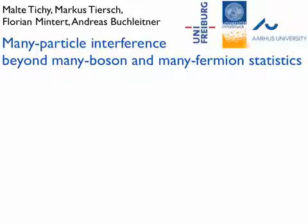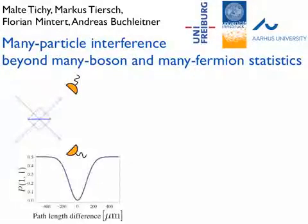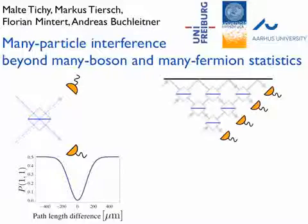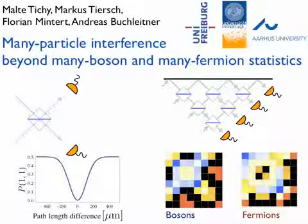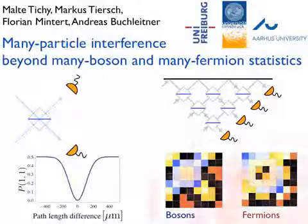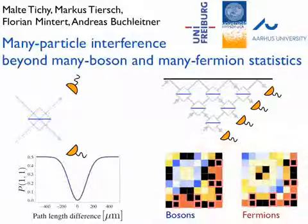In our article, we study the collective interference of bosons and fermions. The two-photon experiment by Hong and Mandel is generalized to a scheme for many bosons and fermions, giving a rich landscape of interference patterns. Surprisingly, although bosons and fermions obey different statistics, they can exhibit very similar interference.